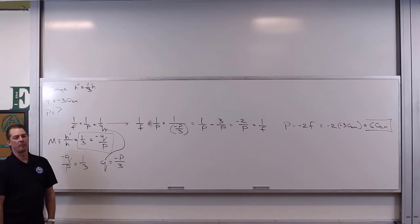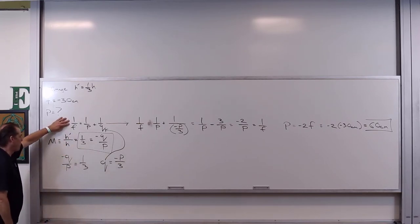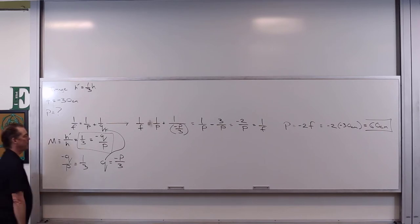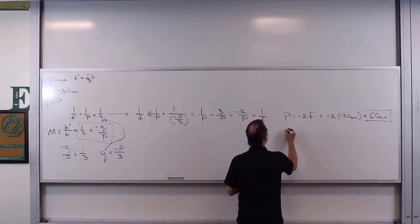Everything else falls into place now based upon just the standard formulization of one over f is equal to one over p plus one over q, and the magnification being negative q over p. So we can go ahead then and figure out, well, what is q?